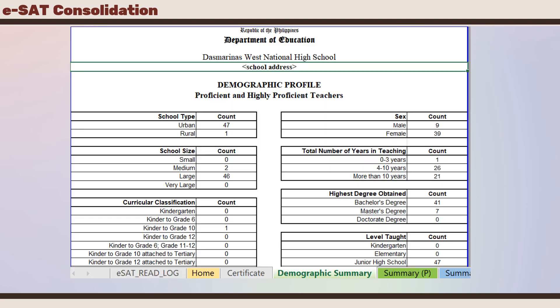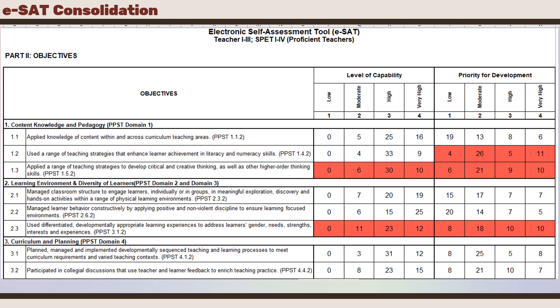Here are some of the reports consolidated using the ESAT console. The first is the demographic profile — all the profiles of our proficient and highly proficient teachers. The next one is the result of Part 2, or the objectives, depending on the level of capability and priority for development chosen by our teachers. We can also use this as a basis for planning our LAC sessions or focus group discussions.